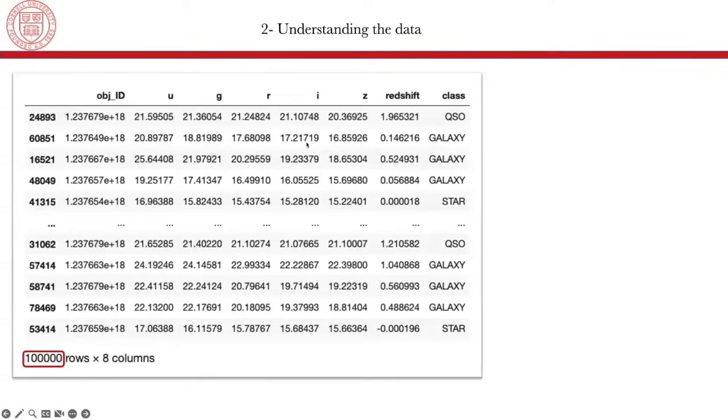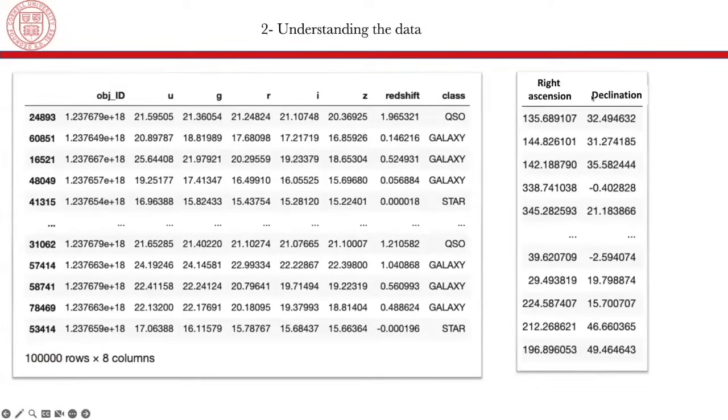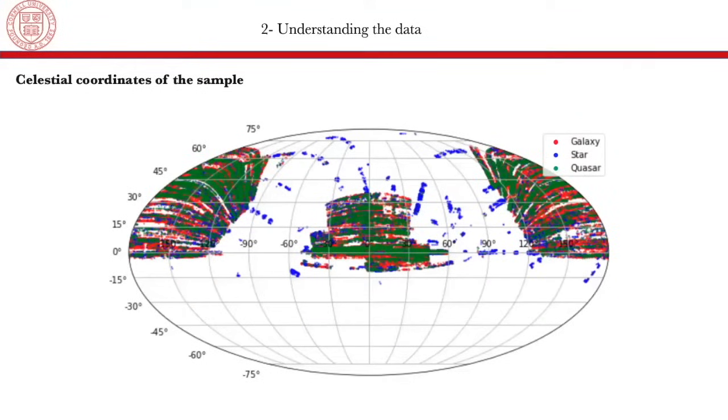And in addition to these different values, we also have the values of the right ascension and the declination of the objects. However, these two values will not be used in the classification. They will only be used to plot the location of the bodies in space. So here is the celestial representation of the different bodies in space. We have galaxies in red, stars in blue, and quasars in green. And we can notice that most objects are located in the north part of the sky. And this is because the SDSS telescope is located in New Mexico, in the United States, in the north hemisphere. So it can only map the north part of the sky.